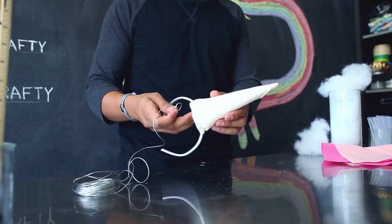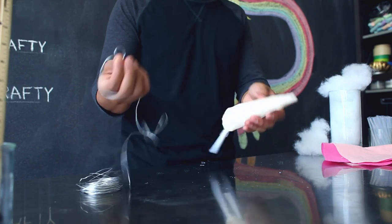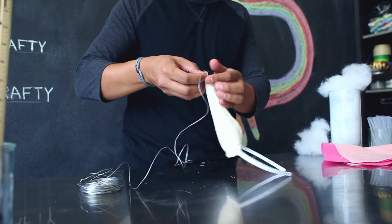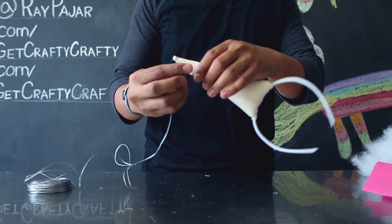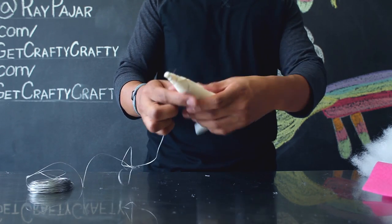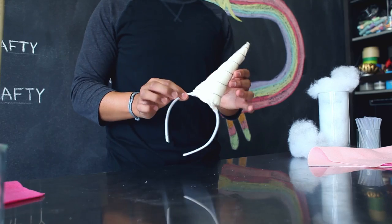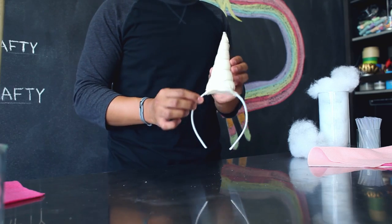After the hot glue has dried on the base of your horn, you're going to take your shiny thread and then you're going to tie a knot at the top of your horn. After securing your knot at the top of your horn, go ahead and create a spiral by wrapping it around your horn to decorate it. After you've tied up your string, go ahead and set your horn aside.